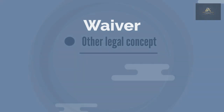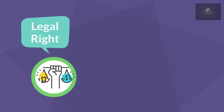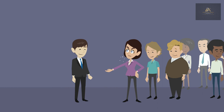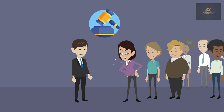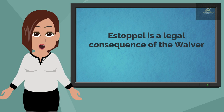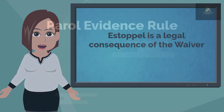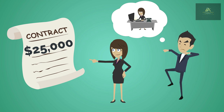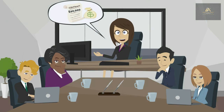Other legal concepts. Waiver: a waiver is the act of voluntarily giving up a legal right, claim, or privilege. Estoppel: estoppel is the legal process used to prevent a party from reclaiming a right or privilege that was already waived; it is a legal consequence of the waiver. Parole evidence rule: the parole evidence rule prevents parties from changing the meaning of a written contract by trying to introduce oral or written statements made before the formation of the contract.